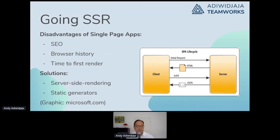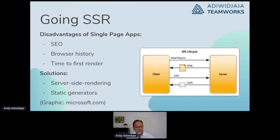The trend towards single page apps is because of interaction possibilities, but there are certain disadvantages: zero browser history and time to first render. There are two major solutions for that — static site generators like Gatsby, Jekyll, or others — and on the other side, server-side rendering, where the major player is Next.js.